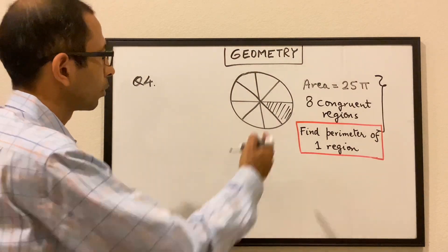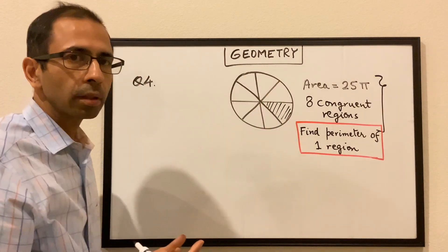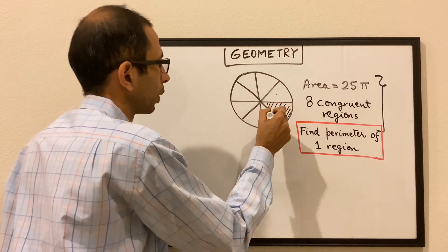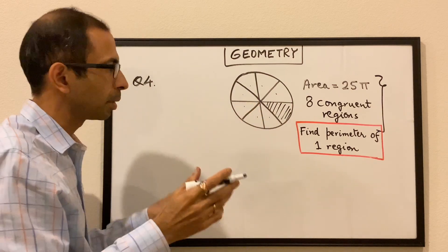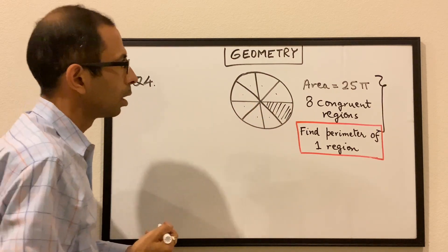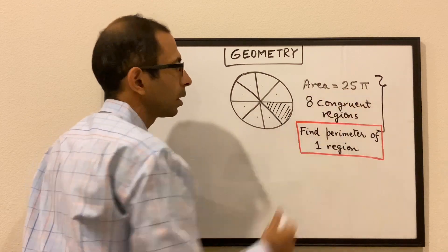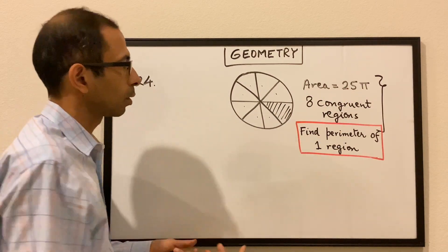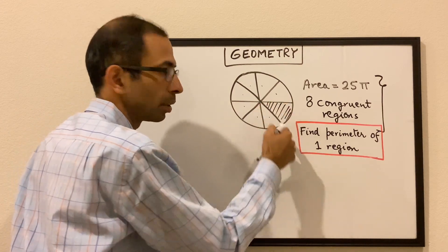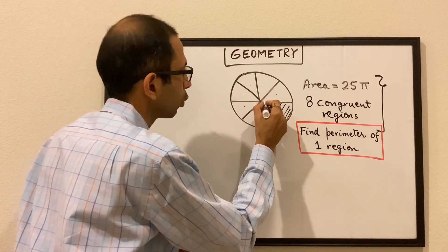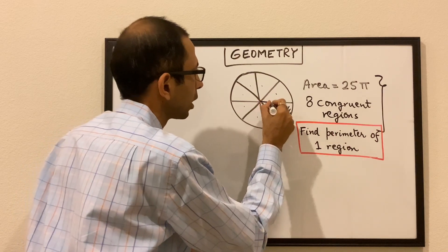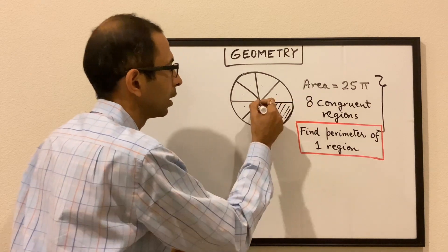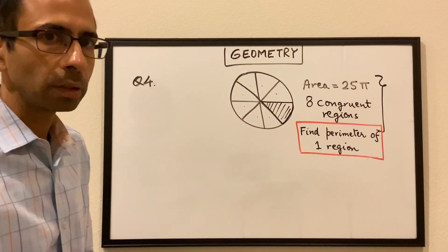So let's move on to the next question. We have a circle that is divided into 8 congruent regions — each of these regions are congruent, exactly the same in size and shape. The area of the circle is 25π, and we have to find the perimeter of any one region — essentially this arc portion plus the two straight sides.